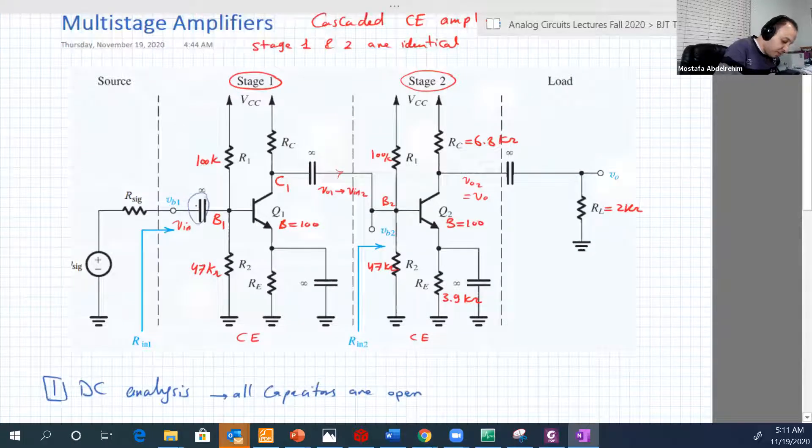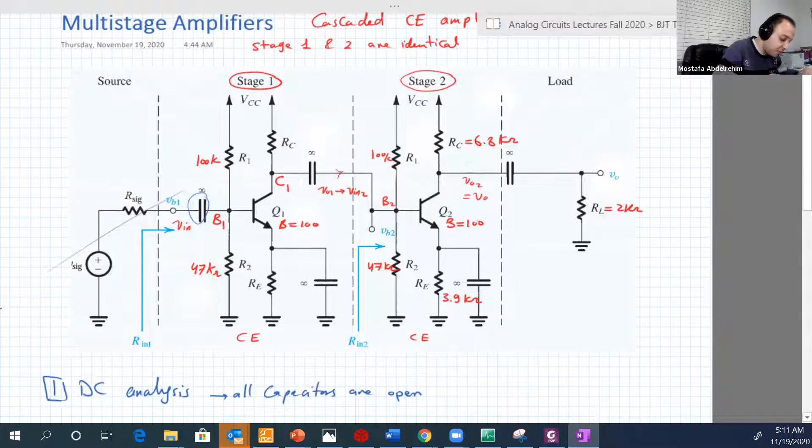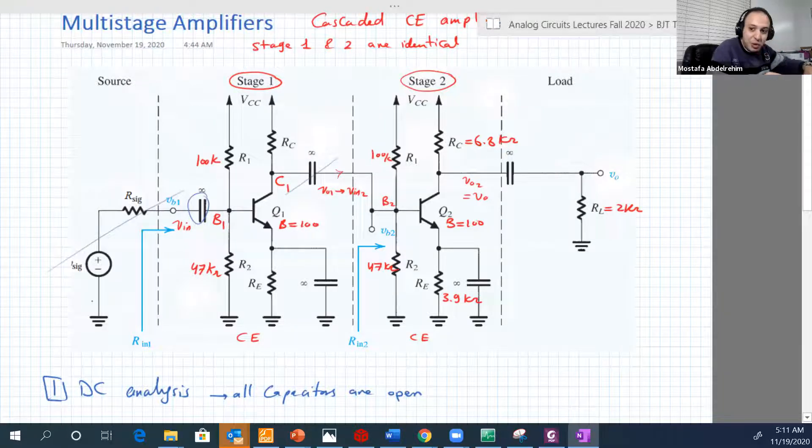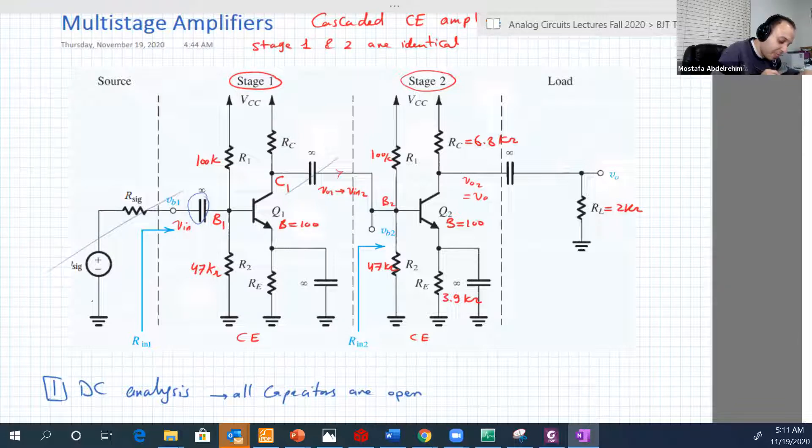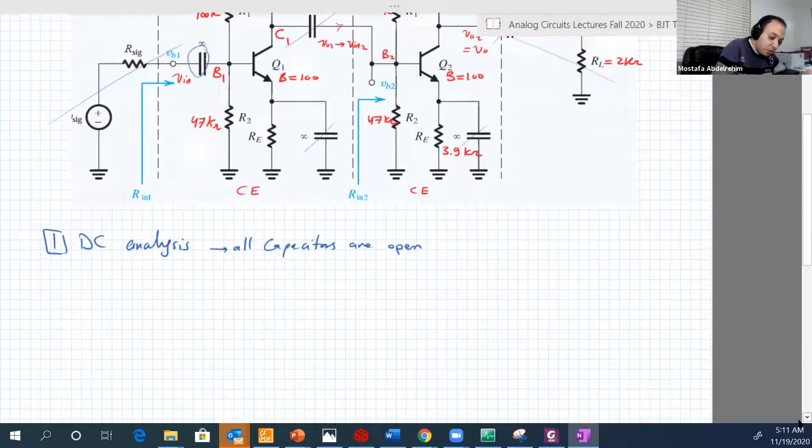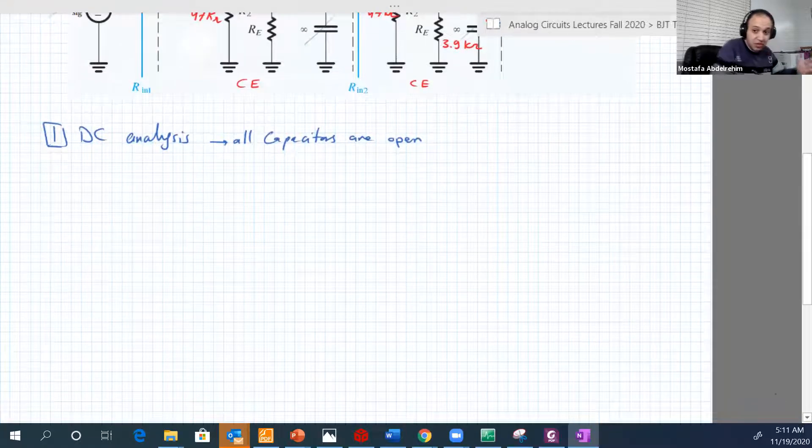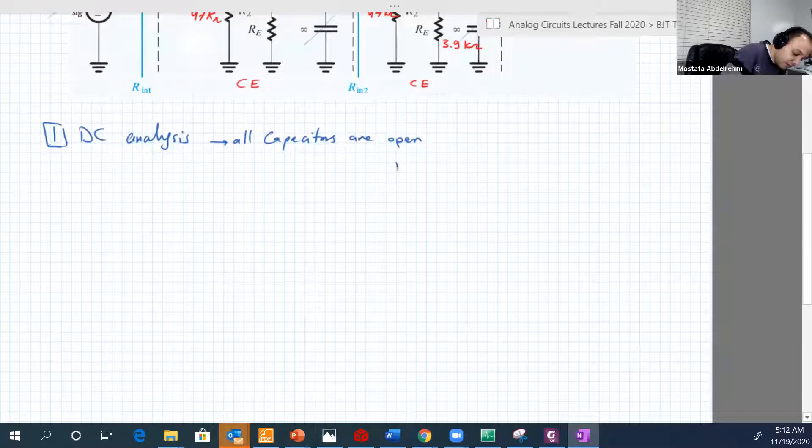So this guy would be open. So this part will be removed. We don't need it in DC. I mean, this capacitor is open, so these two circuits will not be connected in DC. And this capacitor is open. So this part, which is RL, is also removed in DC. And this is open, so we don't have RL in DC. This is also open, so we don't have RL in DC. So if we do this, let's now draw the circuits without the capacitors. So we'll have that situation.